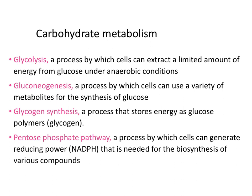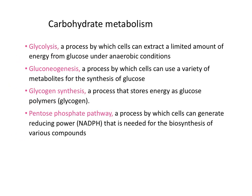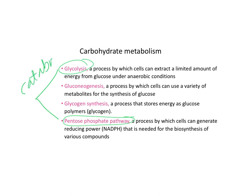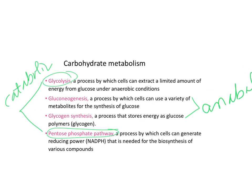This is just a recap of all the pathways that are in carbohydrate metabolism. I wanted to put this here just so that you could see all the pathways that are considered part of carbohydrate metabolism. Glycolysis and pentose phosphate pathway—these are the catabolic pathways, so they break things down. Gluconeogenesis and glycogen synthesis are the anabolic pathways. Glycolysis is a process by which cells can extract a limited amount of energy from glucose under anaerobic conditions. Gluconeogenesis is a process by which cells can use a variety of metabolites for the synthesis of glucose. Glycogen synthesis is a process that stores energy as glucose polymers called glycogen. The pentose phosphate pathway can generate reducing power in NADPH that's needed for the biosynthesis of various compounds. In our case, it's going to be fat.